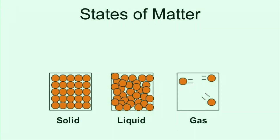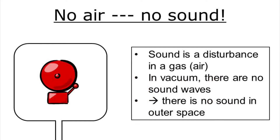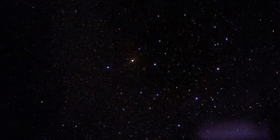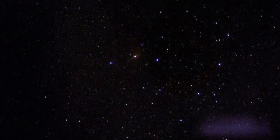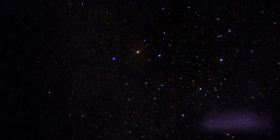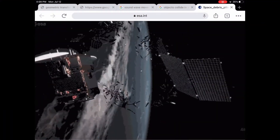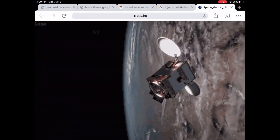Sounds can only be heard when they travel through matter. A sound can travel through any type of matter — from a gas to a liquid to a solid. But if there's no matter for the sound wave to travel through, there's going to be no sound. One place that happens is in space. With no air, there's no matter for the sound to travel through, so when things crash together in space, no sound is made.